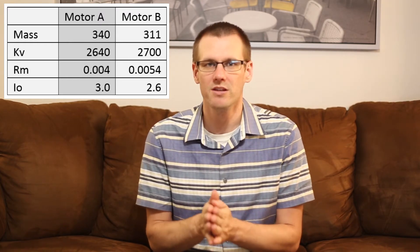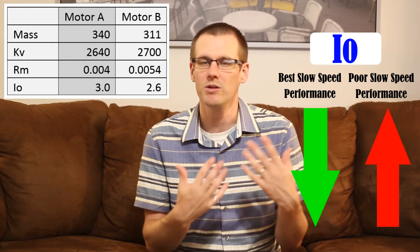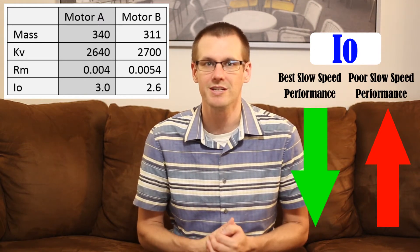So with that said, you could see motor A has a higher IO value than motor B. IO of motor A is 3.0 amps, and motor B sitting at 2.6 amps. So really what we're looking for is the lowest number in this category.